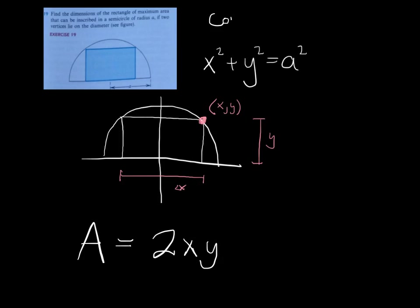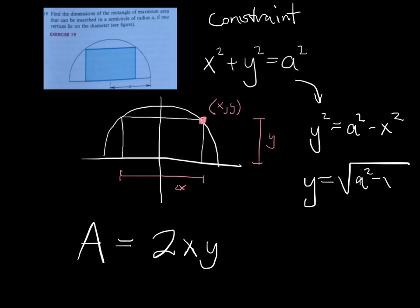This is what we've been calling the constraint. We're going to use it to solve for y. So, y squared is A squared minus x squared. Y is root A squared minus x squared. That gives us our area in terms of only one variable.